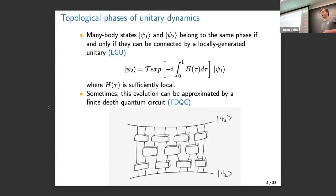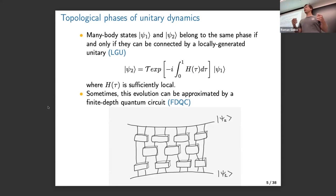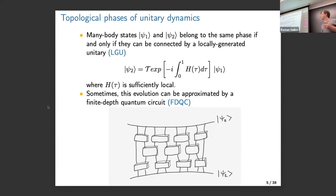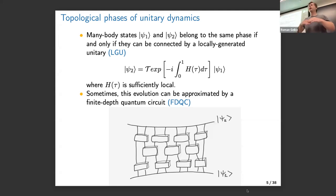You might be familiar with the notion of adiabatic connectivity of two many-body states. We say they are in the same phase of matter if there is a unitary generated by a local Hamiltonian that connects the ground states. In some cases such locally generated unitaries can be approximated by finite depth quantum circuits — a finite number of layers of quantum circuits.